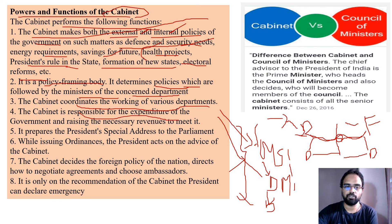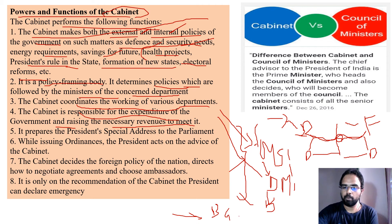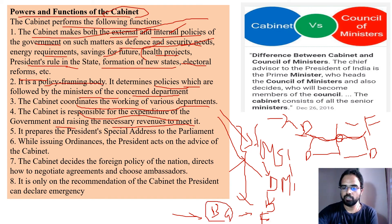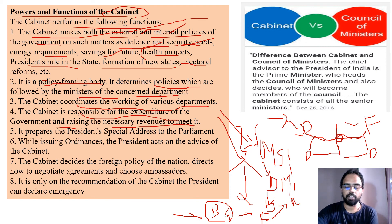The cabinet is responsible for the expenditure of government and raising the revenue necessary to meet it. The budget — the total annual expenditure and income — is introduced in Lok Sabha through the finance minister, who is an important cabinet minister. Through the budget, the cabinet decides all important expenditure matters. The cabinet also prepares the presidential address to parliament and drafts ordinances when parliament is not in session to meet emergency situations.